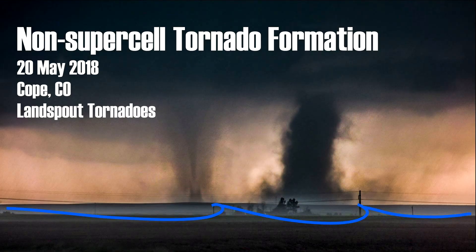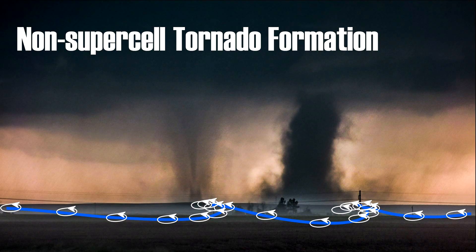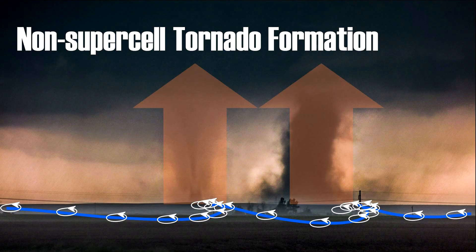Let's start with non-supercell tornadoes — I think this is a lot less controversial. Here are the land spouts I showed you earlier. They usually form when an updraft moves over an existing boundary or front that's hanging out in the environment, and you often get these little kinks in the boundary where they form, which are probably induced by the updraft's low pressure. These spout-producing storms have no mesocyclone and there's no deep rotation aloft. The rotation in this type of tornado is coming from ground level on this boundary in the form of vertical vorticity — basically little columns of spinning air that move along this boundary. These orange arrows represent surface-based updrafts in the storm.